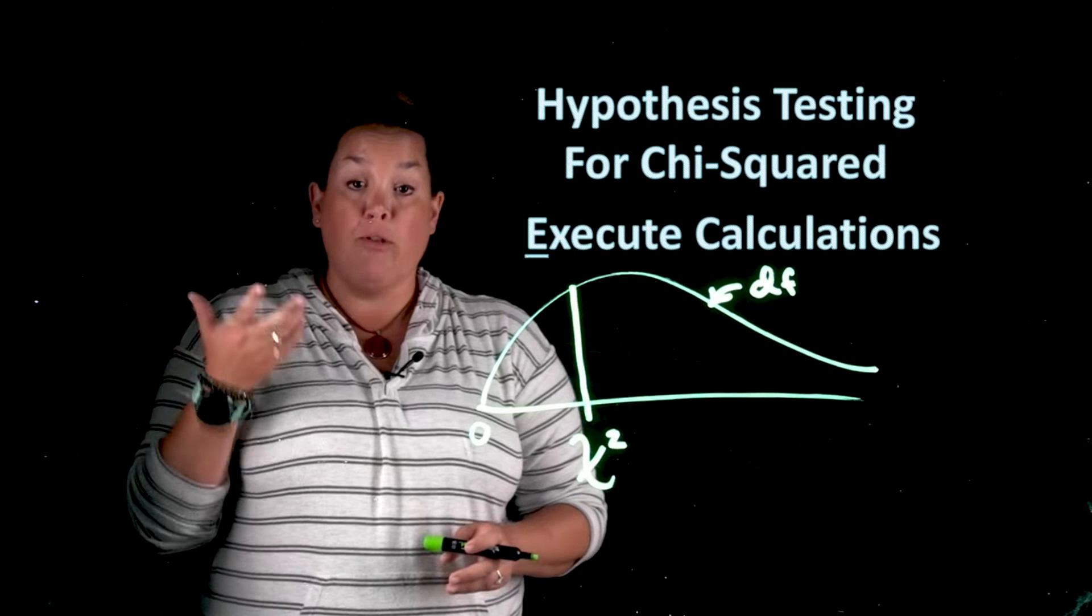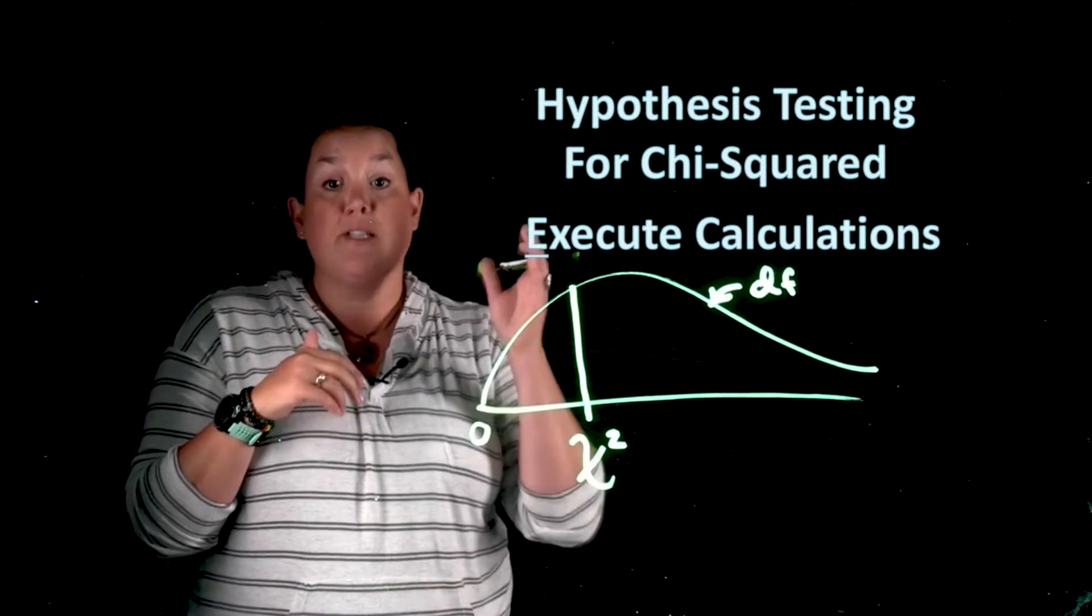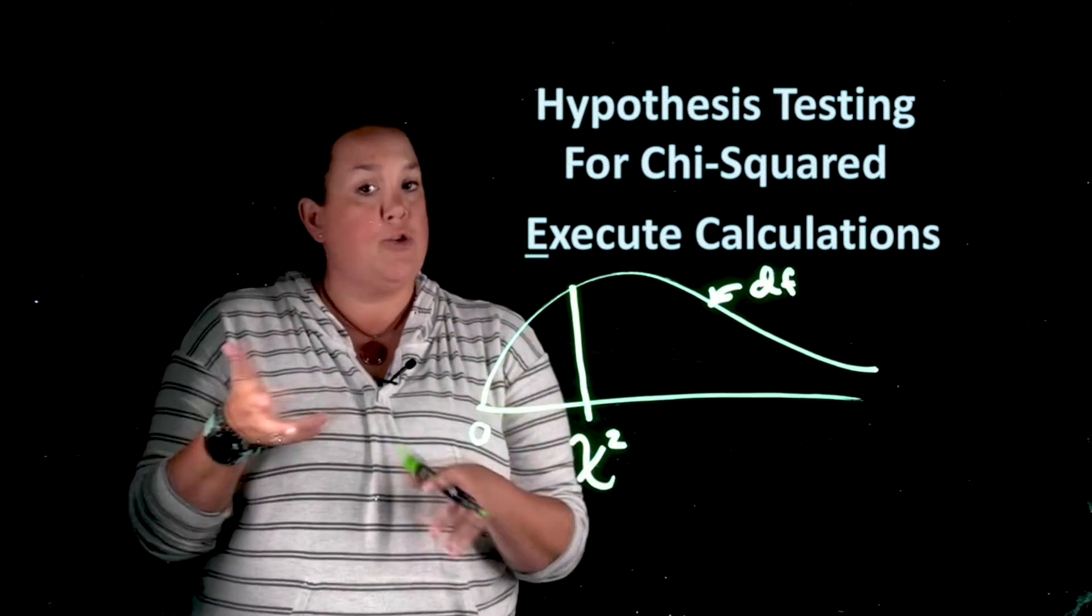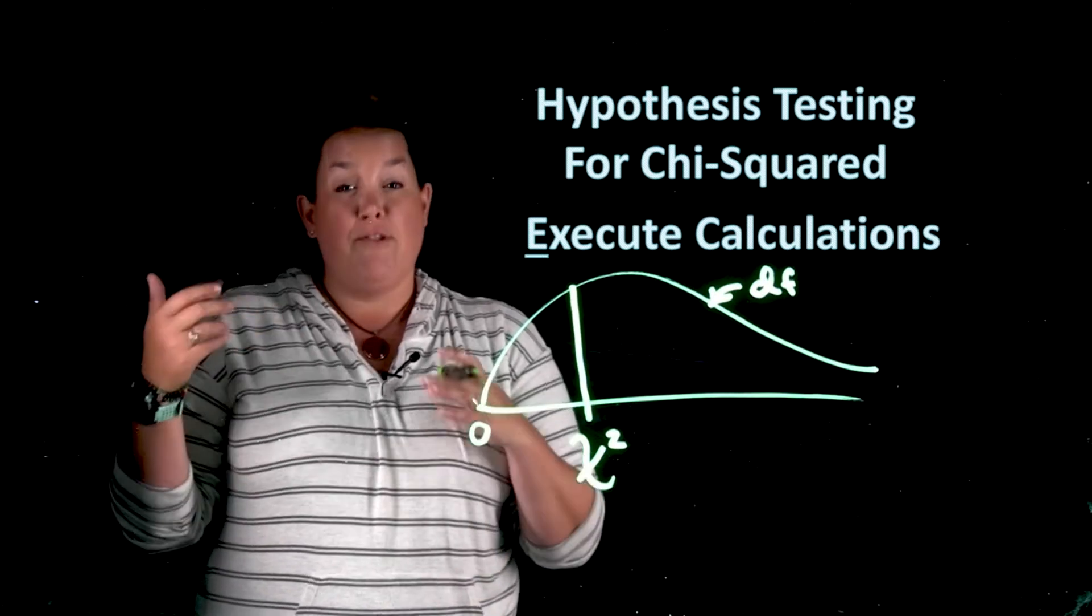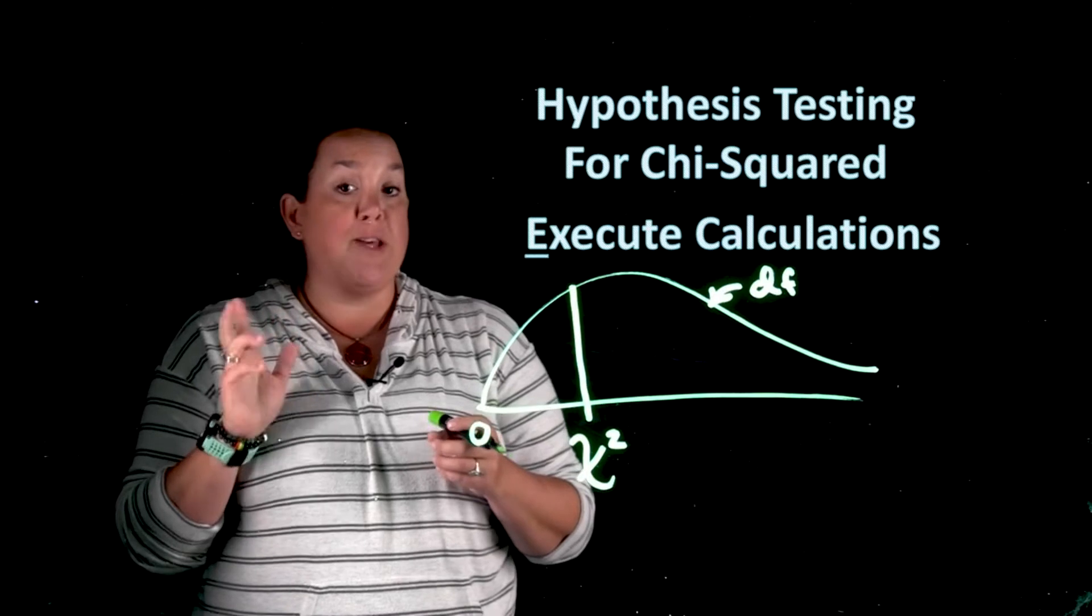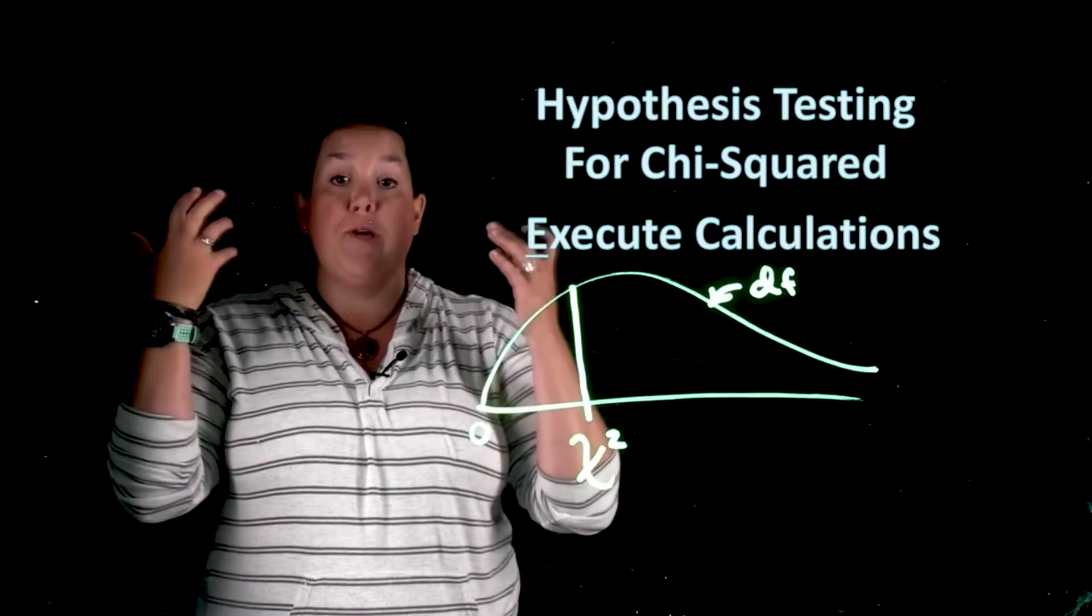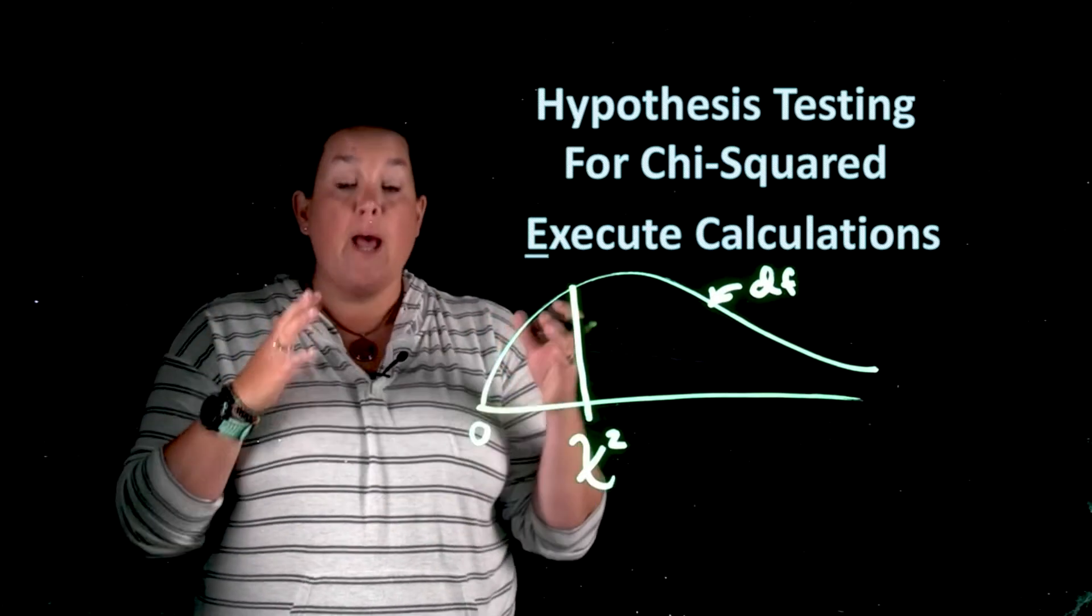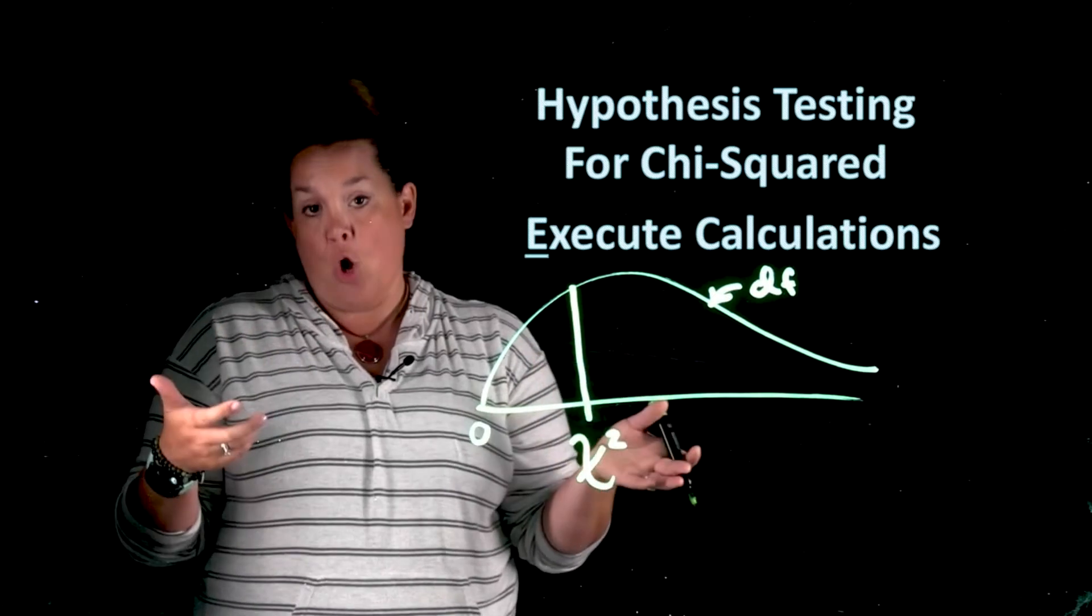If you remember, the formula is observed minus expected squared divided by the expected, and you do that for each cell. Now if you also remember, the expected count is what we expect to see if there is no relationship or no association.